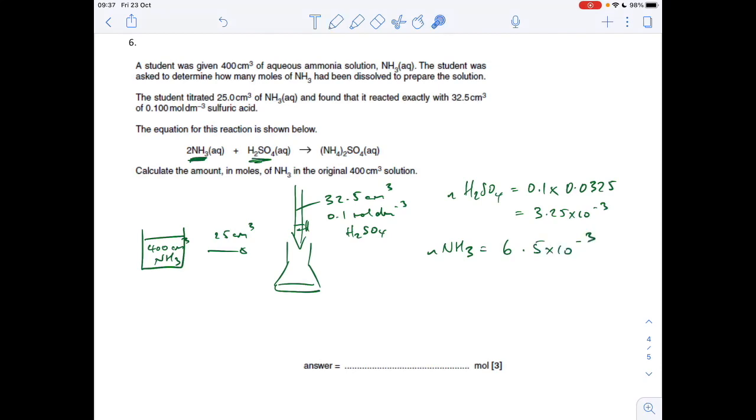The moles of ammonia we're going to establish now from the mole ratio. See I've highlighted the chemicals. So the moles of ammonia is going to be double the moles of sulphuric acid. So 3.25 times 10 to the minus 3 times 2 is 6.5 times 10 to the minus 3. So these moles of ammonia were in this 25 cm cubed. But we want to know how many were in the 400. So we can just say 400 over the 25 times 6.5 times 10 to the minus 3. We're effectively multiplying by 16 there. And that gives us 0.104.